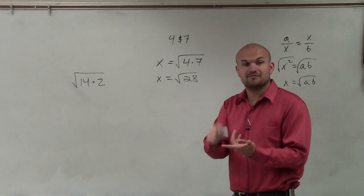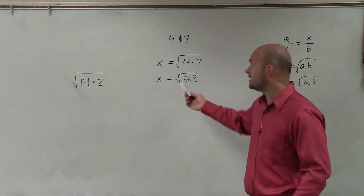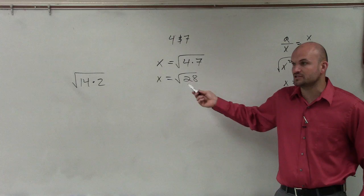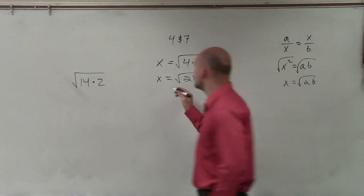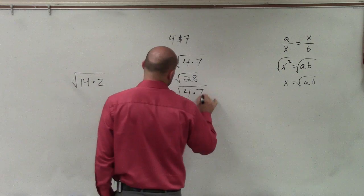But square numbers, we have 4, 9, 16, 25. Out of those numbers that are listed, what is the largest one that divides into 28? 4. So what I do is I rewrite this as 4 times 7.